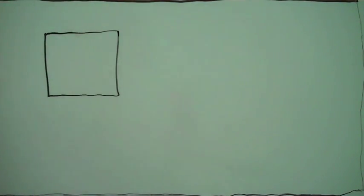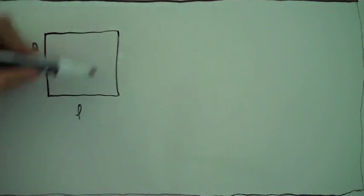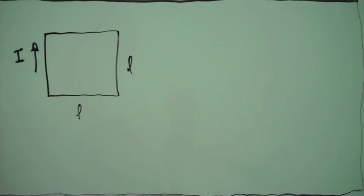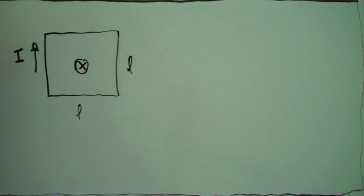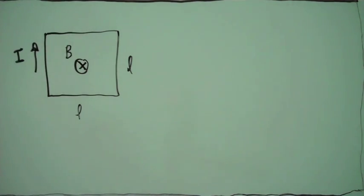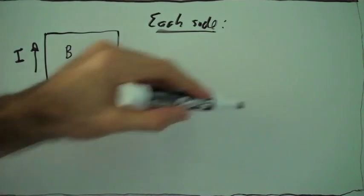In this problem, we have a square loop of current, so the current flows this way. We want to know if the sides are length L, what is the magnetic field at the center of this square loop? The magnetic field points into the board here. So let's look at each side of the square loop.